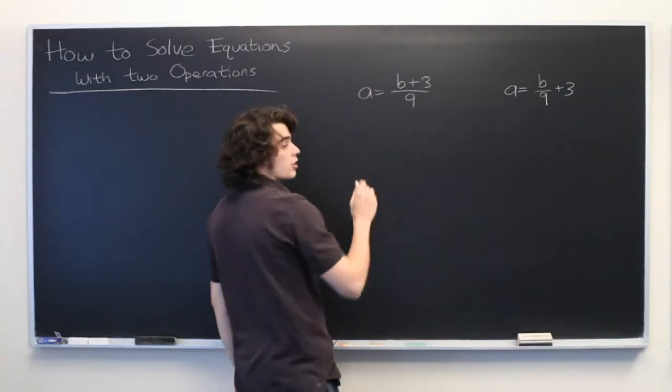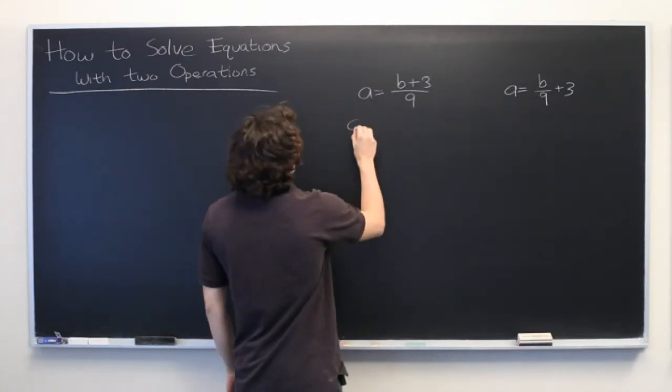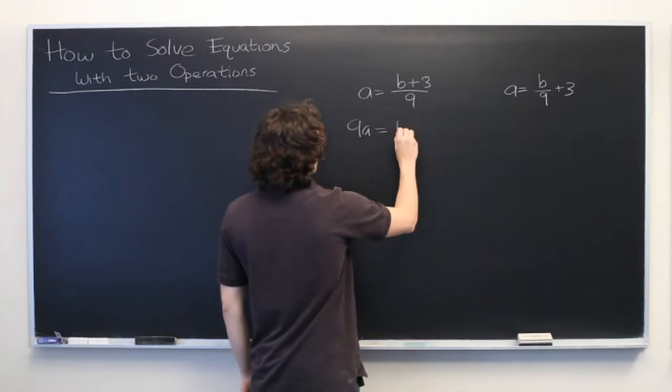First, we're going to multiply on both sides by 9. We get 9a equals b plus 3.